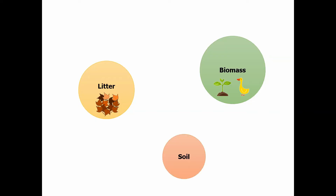The third and final store is the soil. Pretty straightforward — once that litter has broken down it becomes part of the soil, and that is our third store of nutrients.